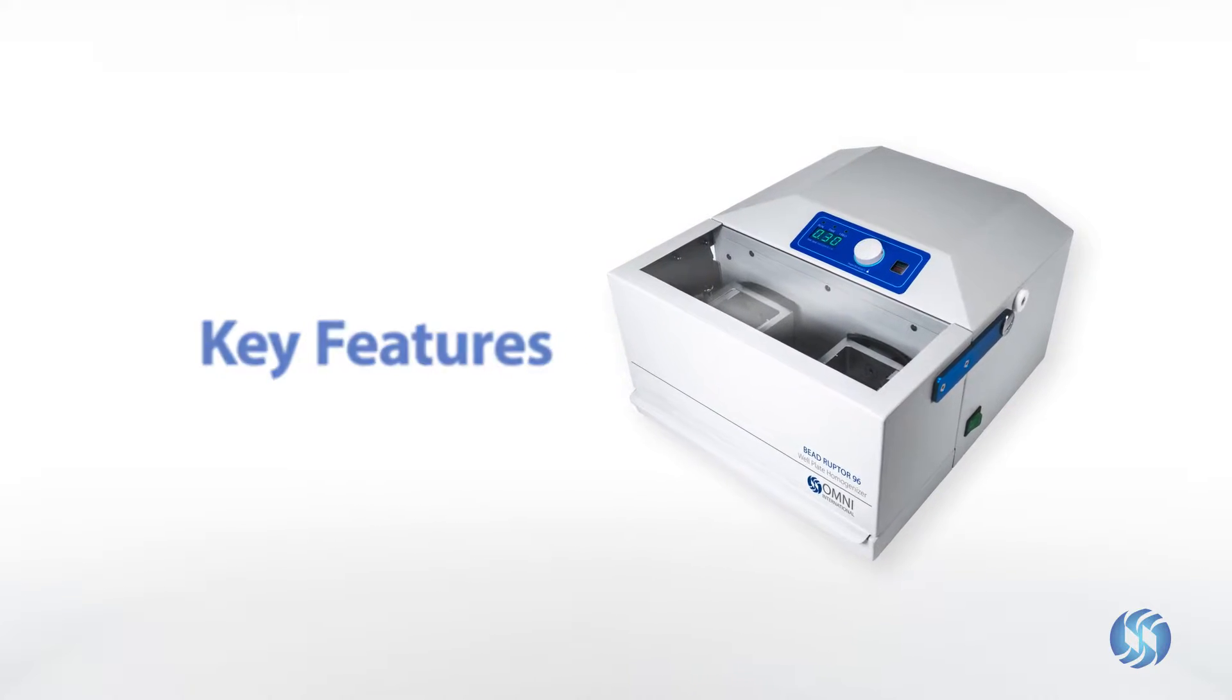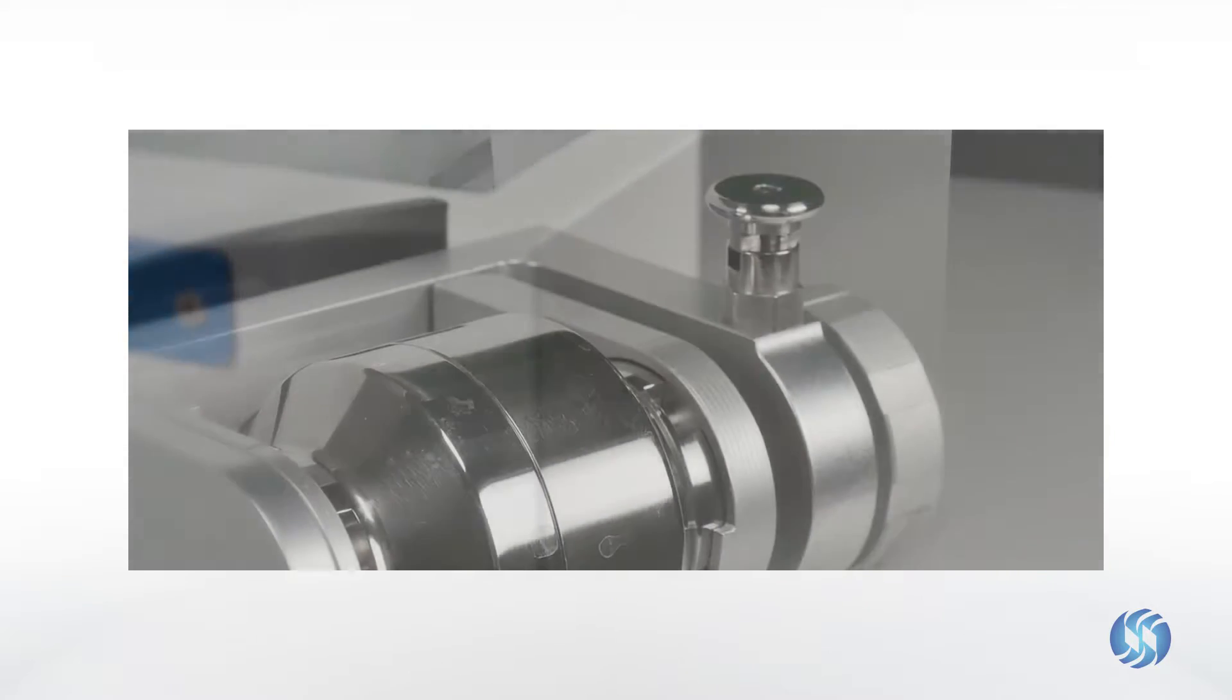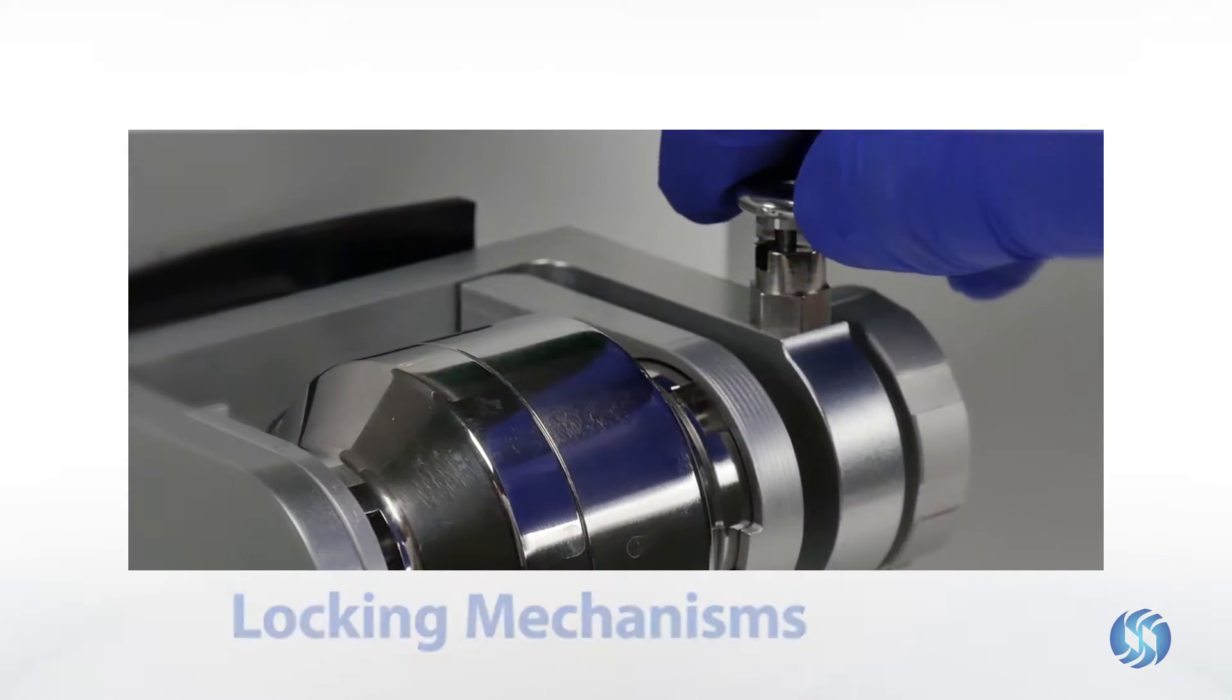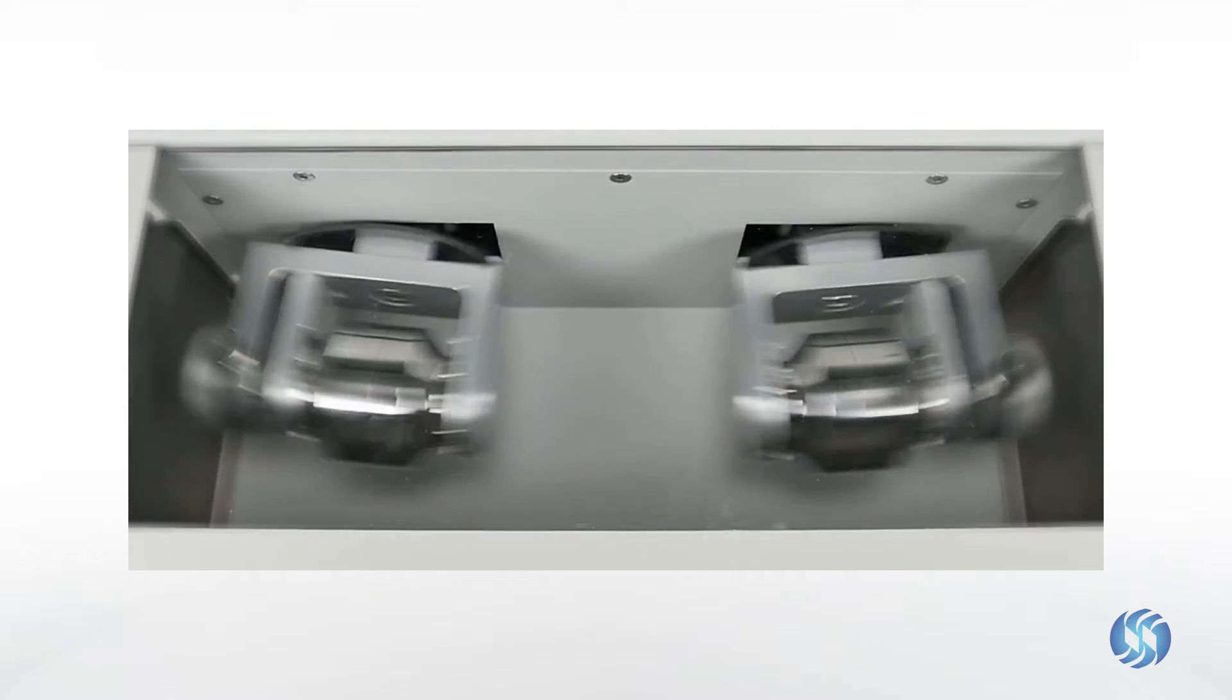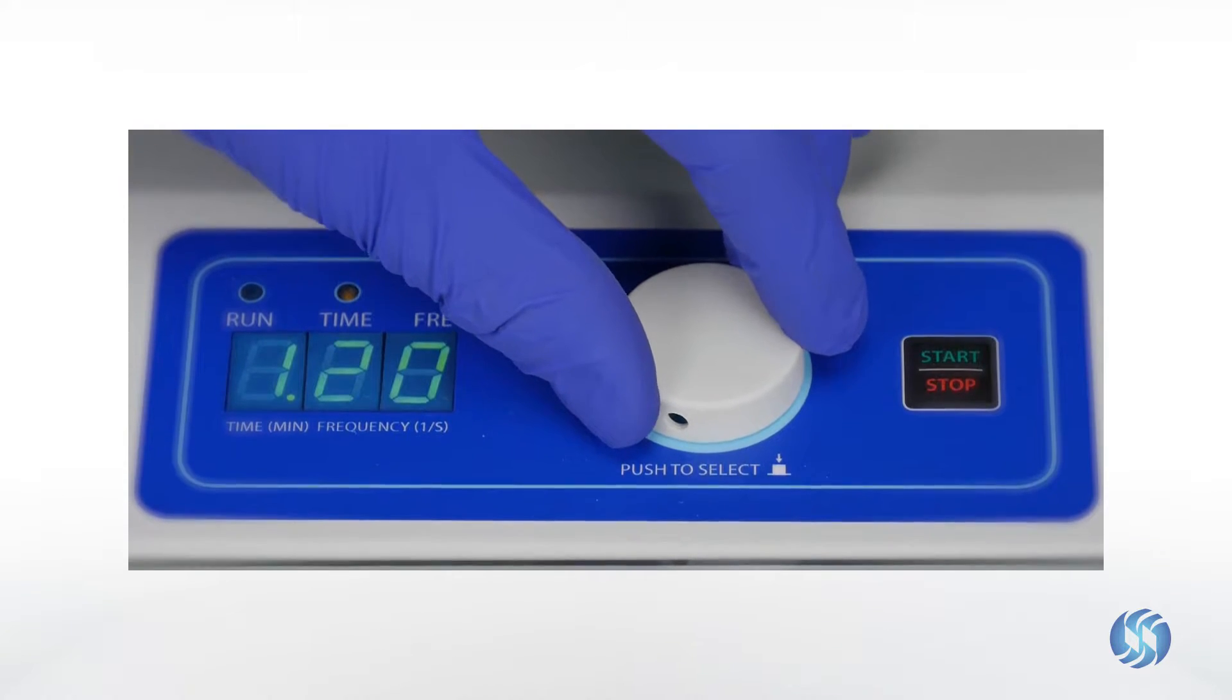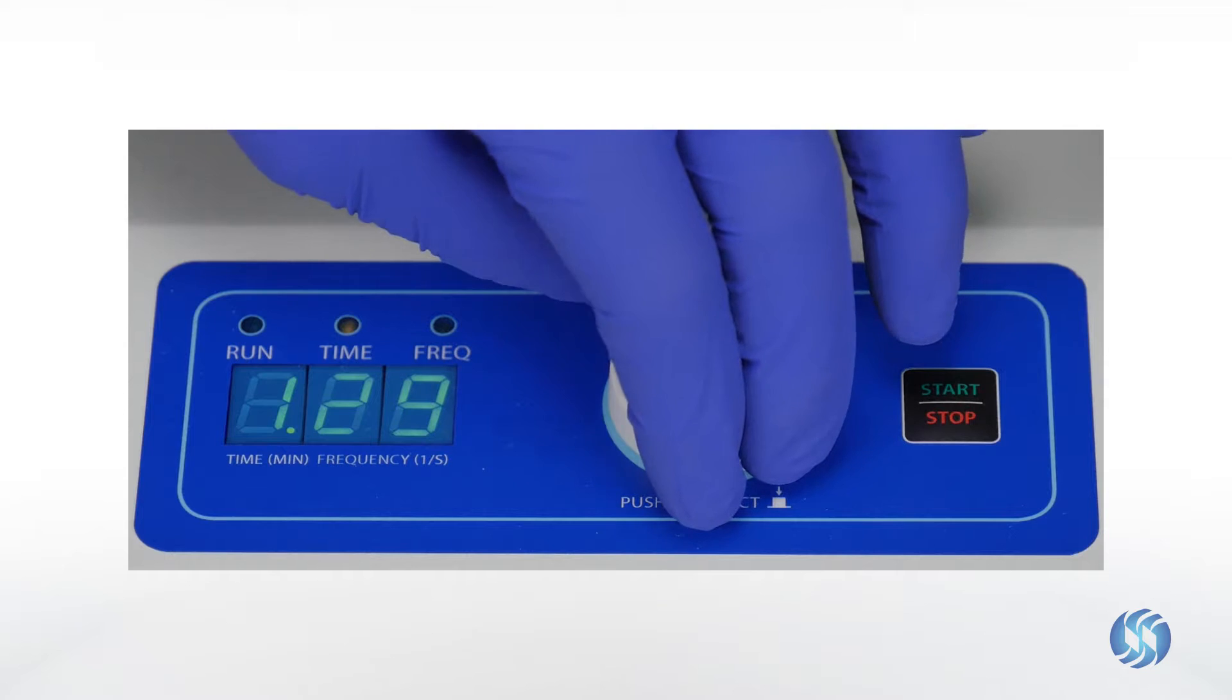The Beadruptor 96 ensures safe operation through lid closure detection and processing attachment locking mechanisms. Large processing swath results in high bead impact forces to reduce processing times. The Beadruptor 96 also features digital controls for reproducible processing.